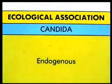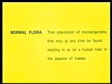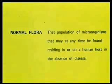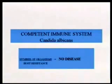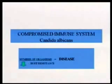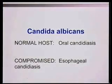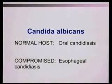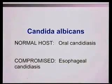Candida albicans is endogenous and harmless in most people — that's normal flora, organisms in the normal body in the absence of disease. With good host resistance, we don't have disease. But in the compromised patient, with host resistance down, we get disease. Candida albicans in the mouth can look horrible. Early in the AIDS epidemic in the early 90s, dentists would detect oral candidiasis — you cure it and it's over. But compromised individuals get Candida of the esophagus.